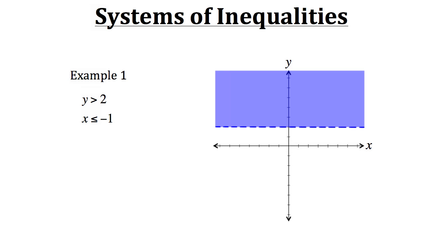Now let's draw our second inequality. We have x is less than or equal to negative 1, so we're going to draw a line at x equals negative 1. This time it's going to be solid because x equals negative 1 is part of the solution. Now we need to shade in the area expressed by the inequality — if x can be less than or equal to negative 1, it could be anywhere in the left, or negative, direction of this x equals negative 1 line.